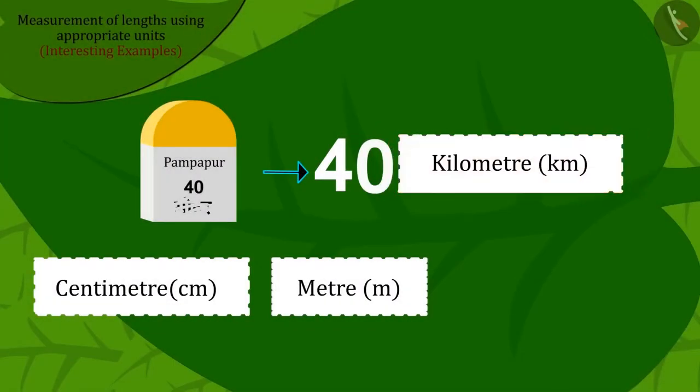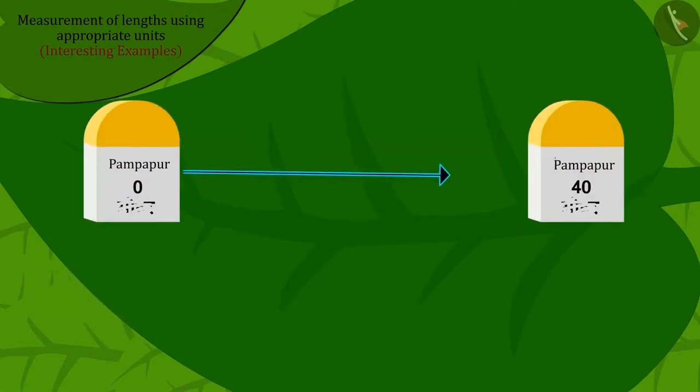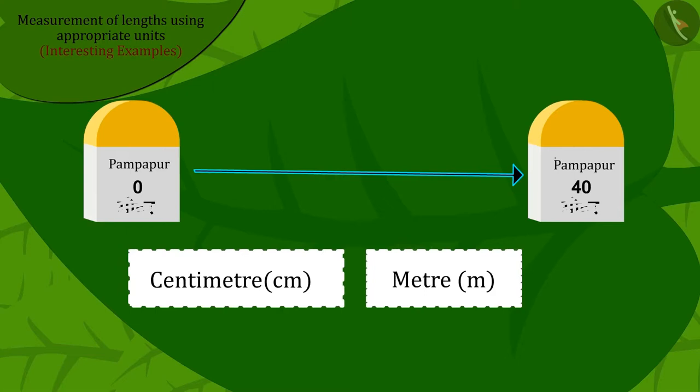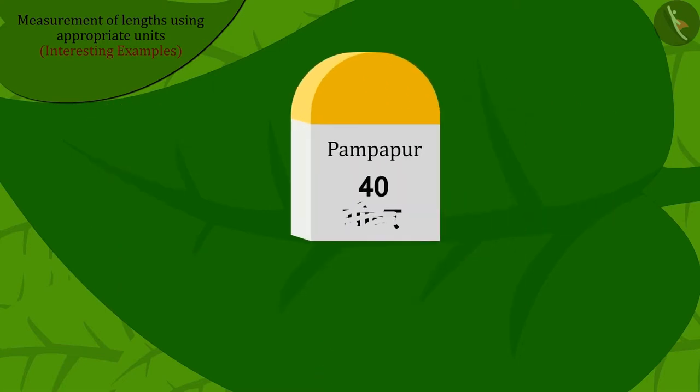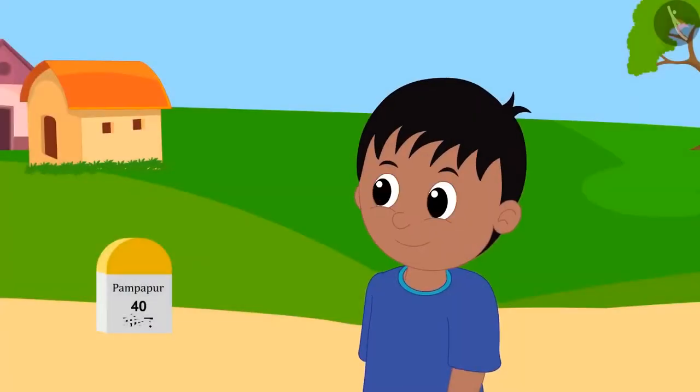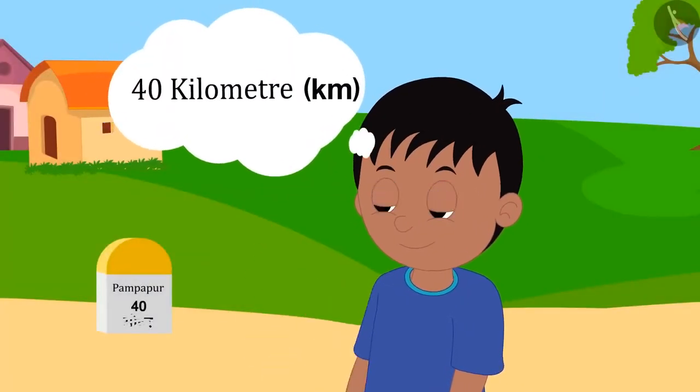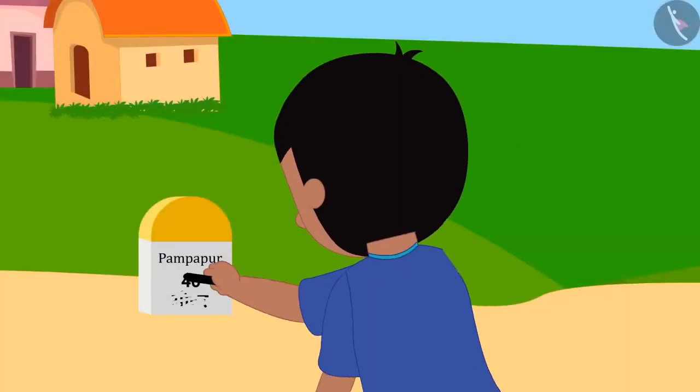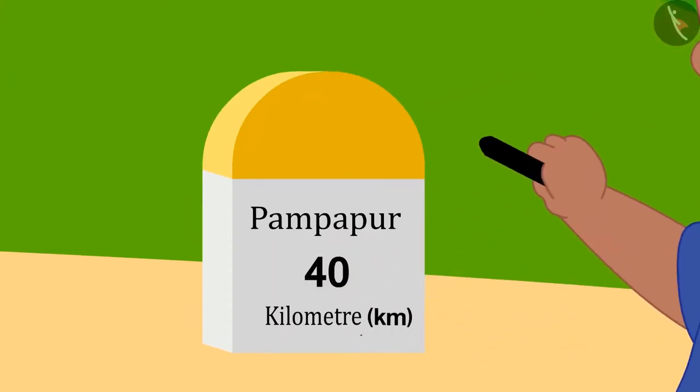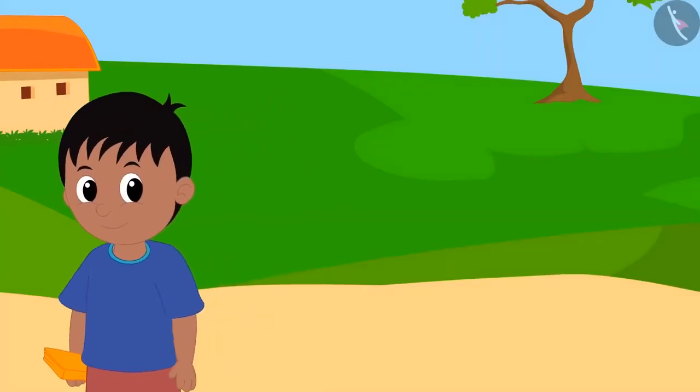Well done kids! You have found the correct answer. Because the distance between places is very long, we cannot write them using centimeters or metres. Hence, the distance from there to Pampapur will be 40 kilometers. Raju found the right answer with your help. Then, he took a piece of coal and wrote 40 kilometers in this way and returned to his home.